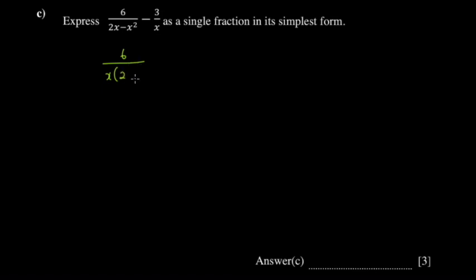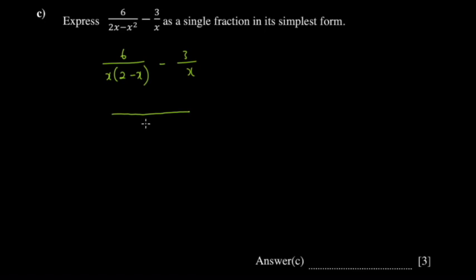The reason we factorize the denominators is that we want to expose the factors. Take care here - I was about to make the mistake of putting positive here, but if there's a negative, it must stay negative. So it's minus 3 over x. The reason we factor this out is that we need to determine the lowest common multiple.